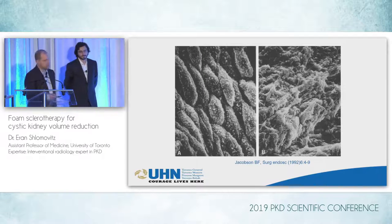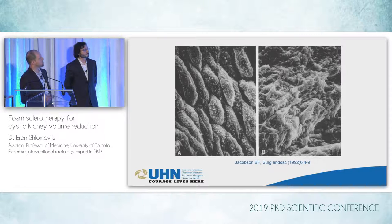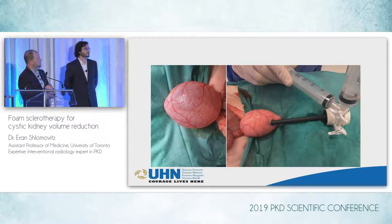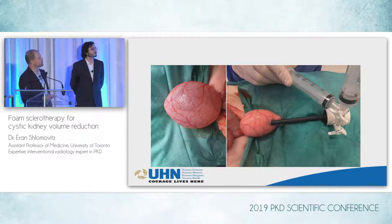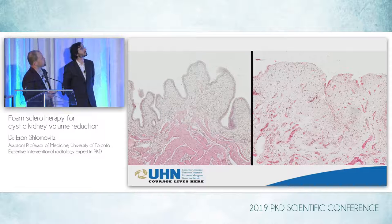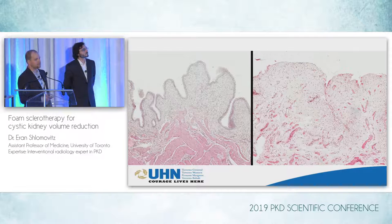To show how the sclerosant works — this is electron microscopy showing a vascular epithelium demonstrating that it basically destroys the phospholipid layer and the epithelium. We've done our own study using a pig bladder as a model, inserting a port and injecting the foam. Pre-sclerotherapy, you see a nice epithelial layer; post-sclerotherapy, it all washes out. In the crypts, you can see a little bit of epithelium left that didn't come in contact with the STS — which is why it's important to get the cyst as fully collapsed as possible before injecting the foam.